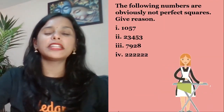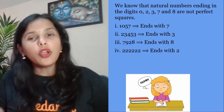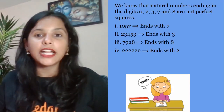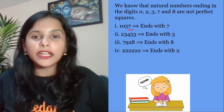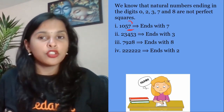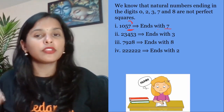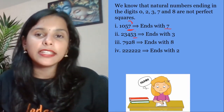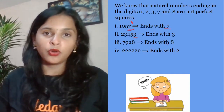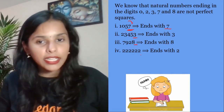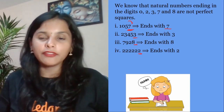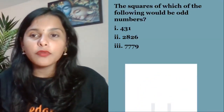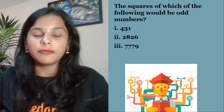Next question: Natural numbers ending with digits 0, 2, 3, 7, or 8 are not perfect squares. In the first part, the number ends with 7 — so it is definitely not a perfect square. In the second part, the number ends with 3, and another ends with 2 — so neither are perfect squares.